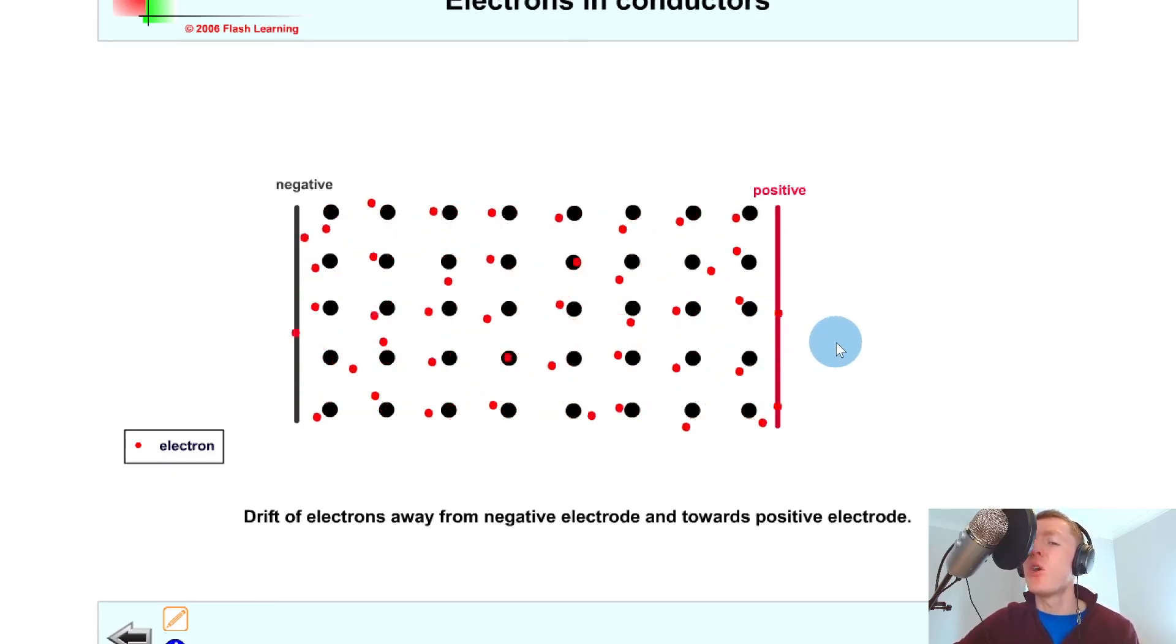But it doesn't need to be all of the electrons, which is why I've said net movement, which just means that the majority of the electrons will move. And you'll notice that going on in the simulation here where not all of the electrons are moving over towards the positive terminal.